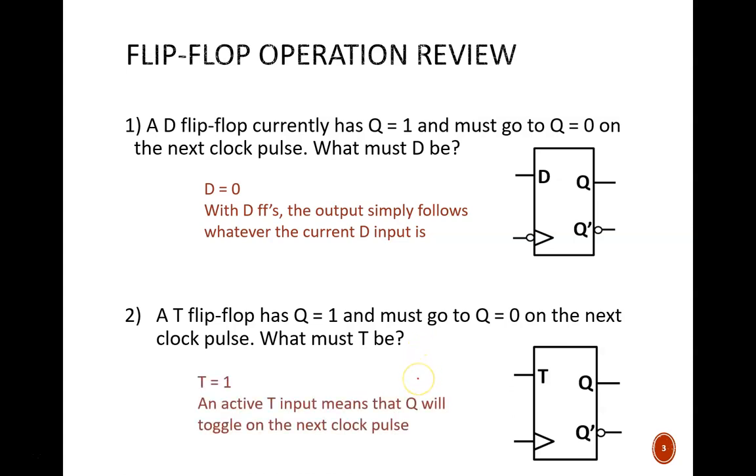The answer here is 1. With a T flip-flop, the available modes are either toggle or no change. To obtain that desired change, from Q = 1 to Q = 0, then we must be in toggle mode. Therefore, the T instruction must be 1. In this case, that toggle will occur on the positive clock edge.